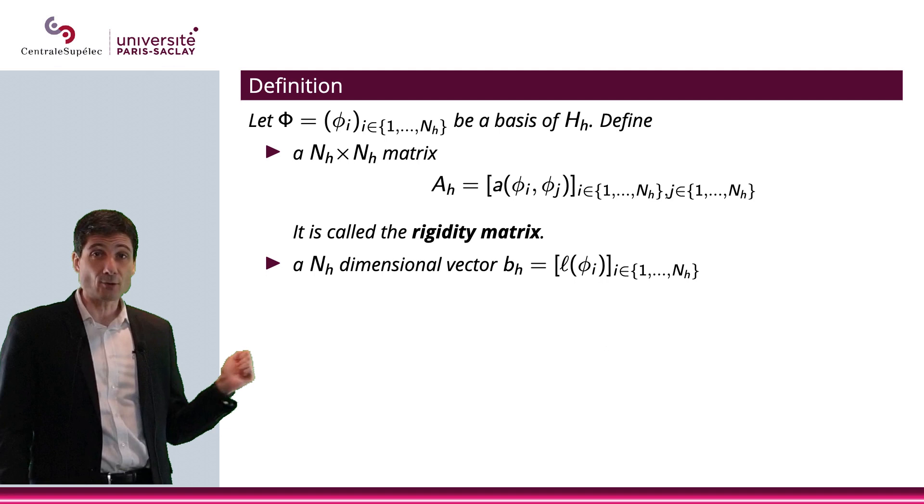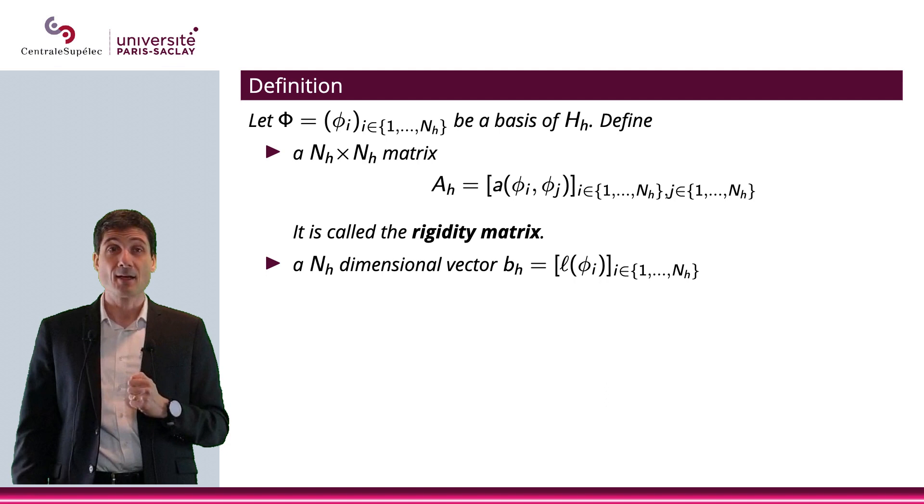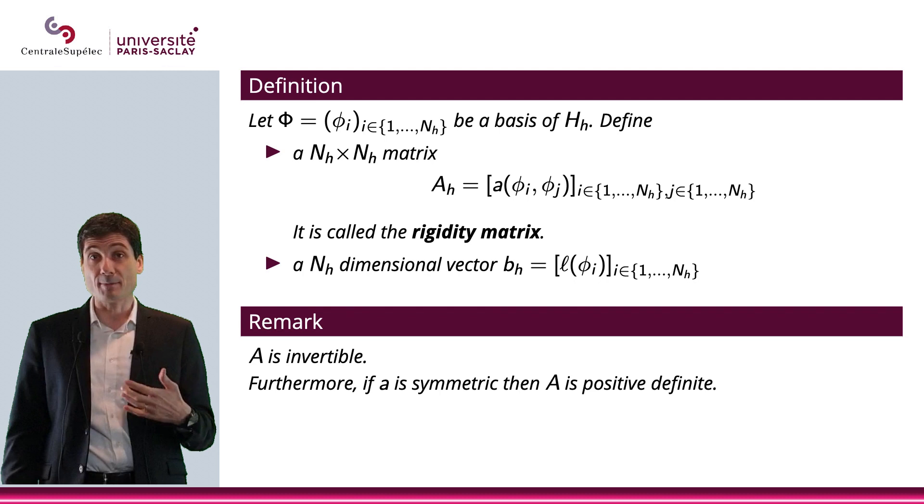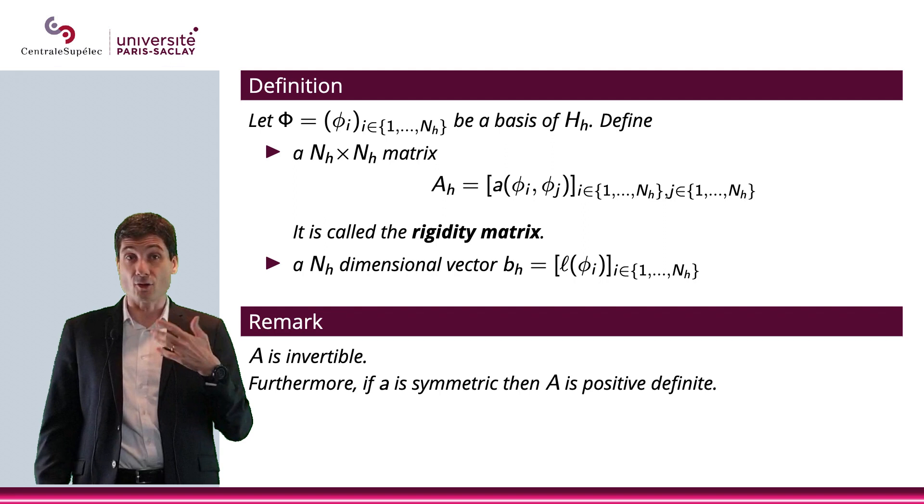The other thing I would like to define is a vector bₕ, and the vector bₕ will be simply ℓ applied to the elements of my basis, φ₁ to φₙₕ. Let me make a remark here, which is that A is invertible. It's a non-singular matrix because a is coercive. Also, if a is symmetric, then A is on top of this, is a positive definite matrix.